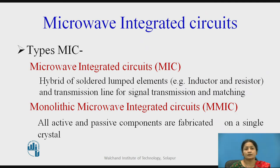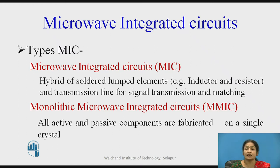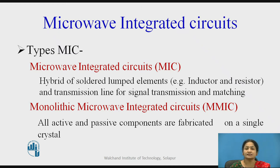There are two types of microwave integrated circuits. One is the Microwave Integrated Circuit, called MIC. In this, it is a hybrid of lumped elements — meaning it consists of inductors, resistors, and transmission lines for signal transmission and matching. All these components are integrated in the microwave integrated circuit. The other type is the Monolithic Microwave Integrated Circuit, MMIC, in which all active and passive components are fabricated on a single crystal.